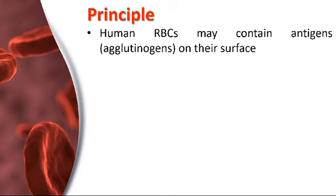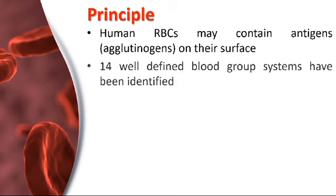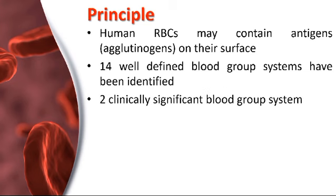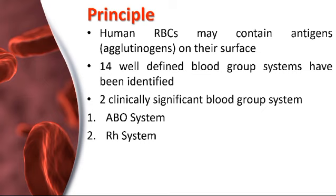Human red blood cells may contain genetically controlled blood group antigens, which are also called agglutinogens, on their surface. These appear early in fetal life and remain unchanged throughout life. On the basis of these antigens, at least 14 well-defined blood group systems have been identified. The two most clinically significant blood group systems are the ABO blood group system and the RH blood group system.